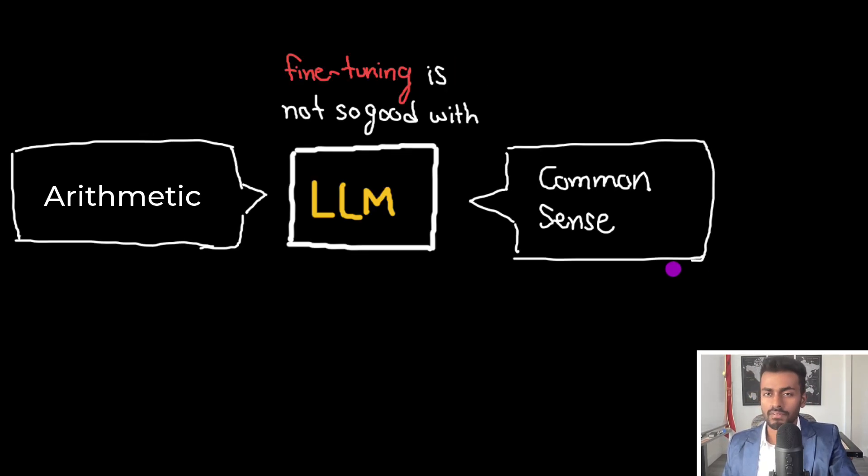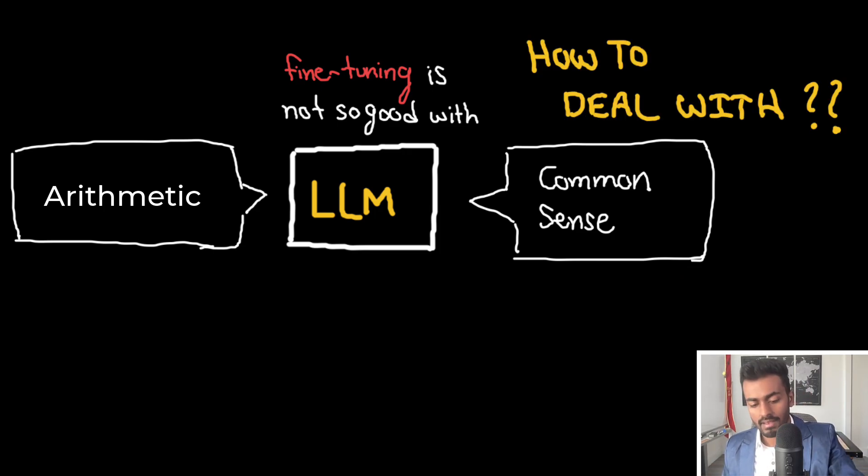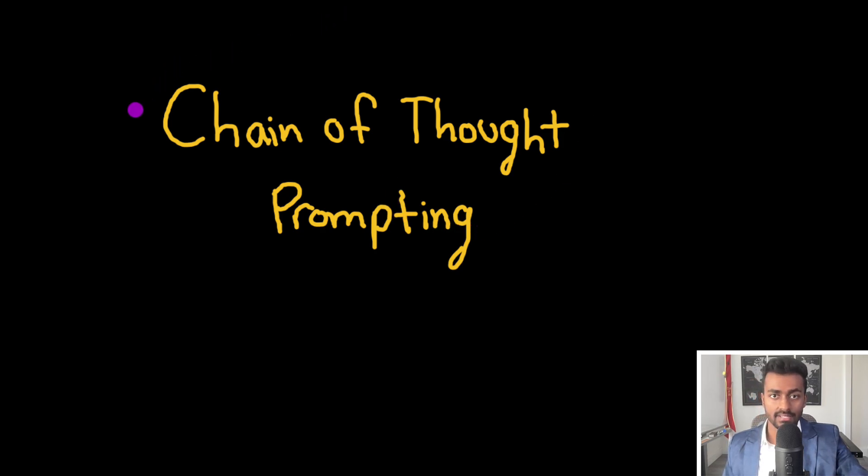However, there are a few tasks where LLMs, even when fine tuned on a specific task struggle. And this includes arithmetic or some common sense reasoning. And so how do we deal with this? Well, one way to deal with this is the chain of thought prompting.